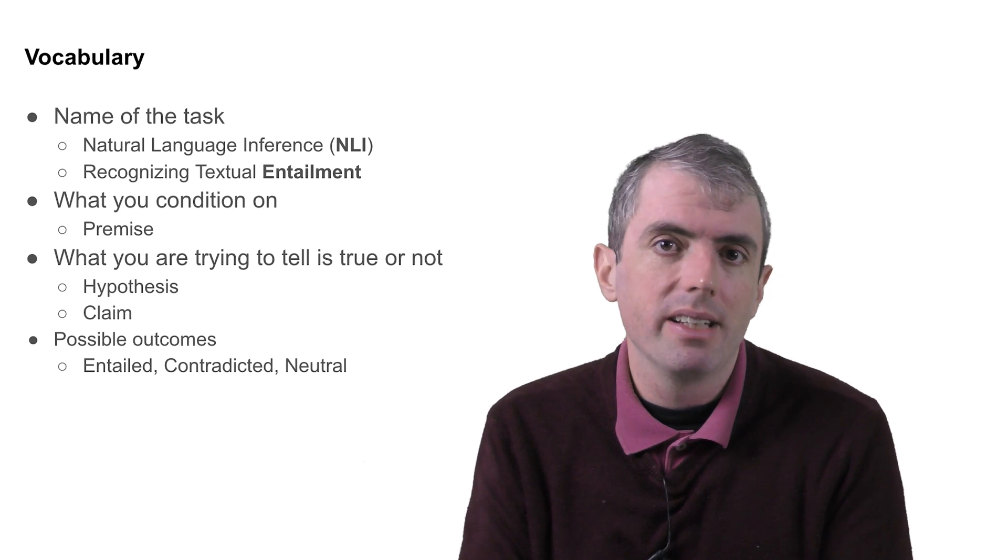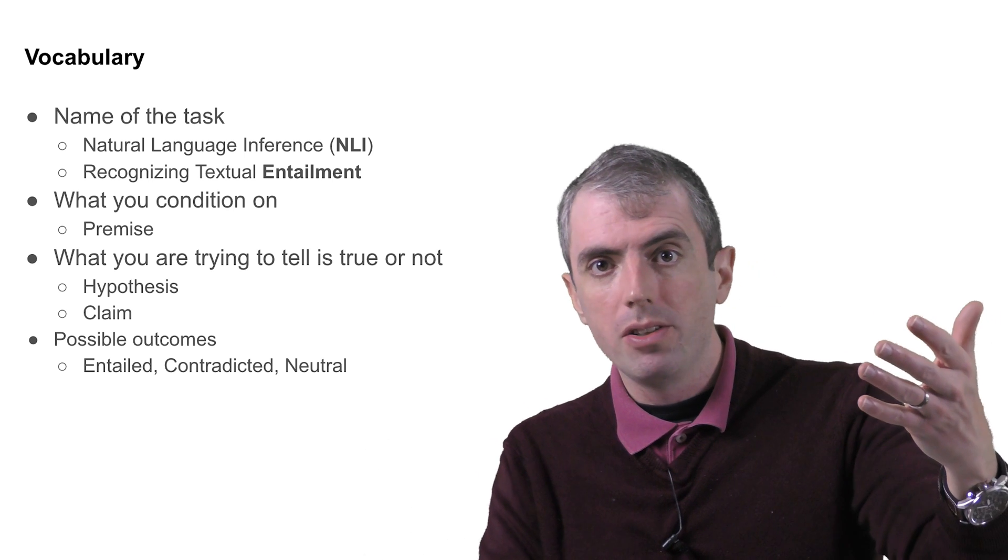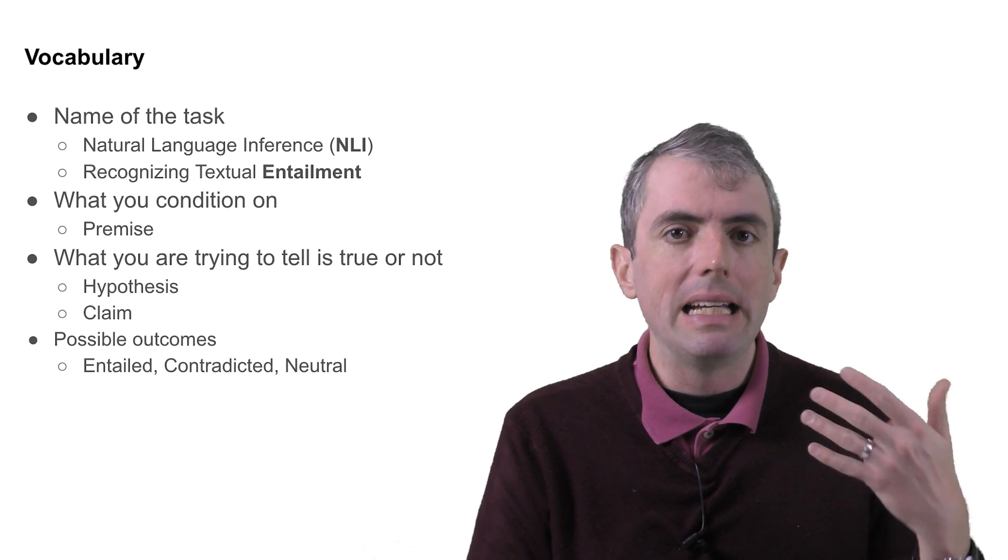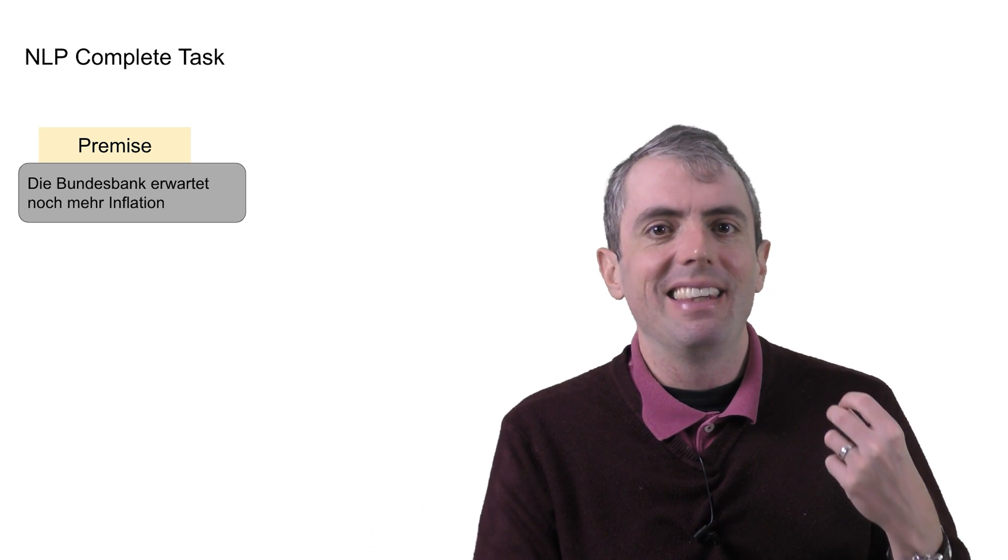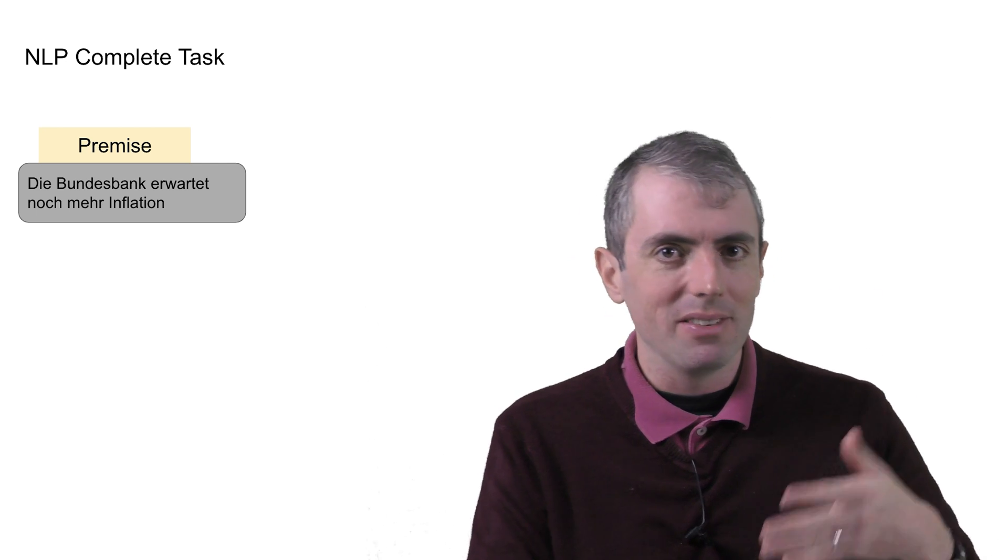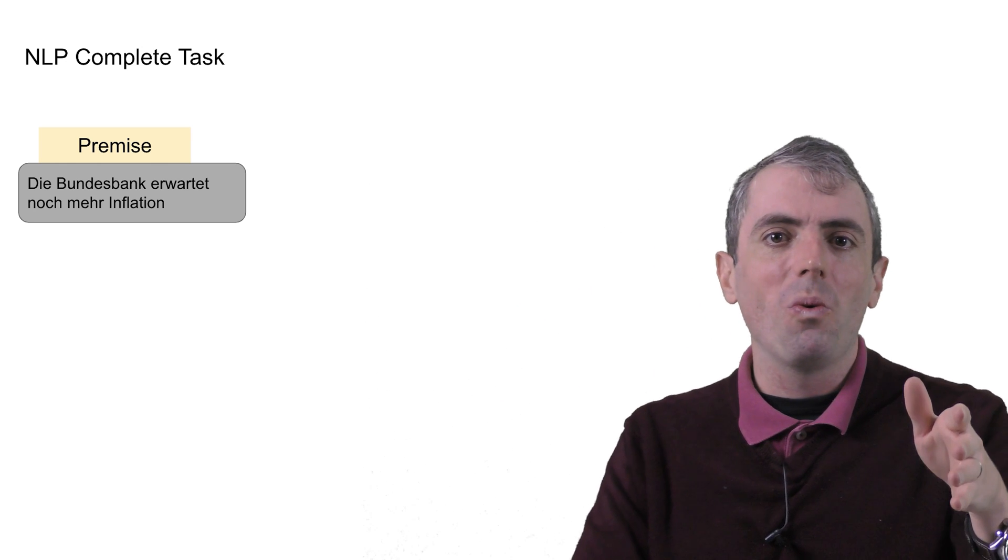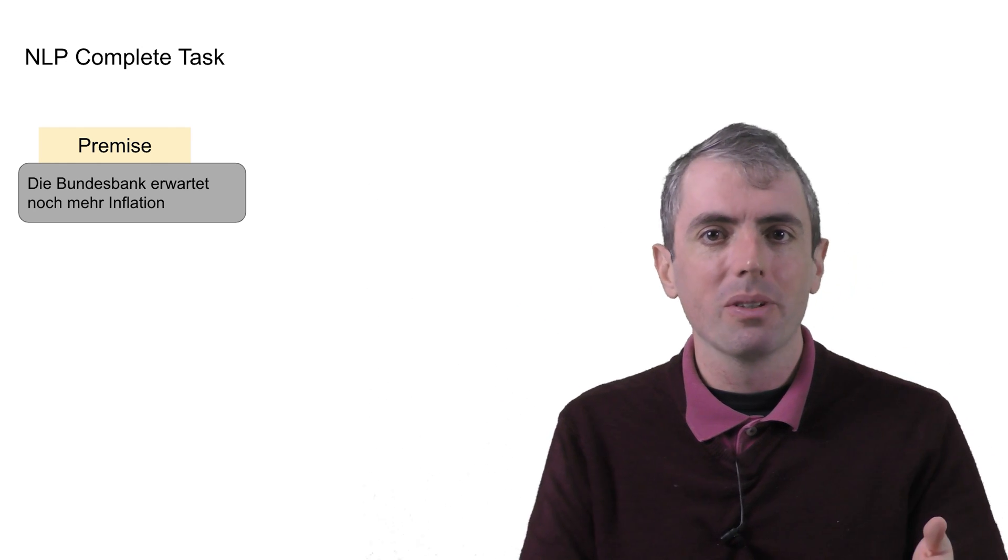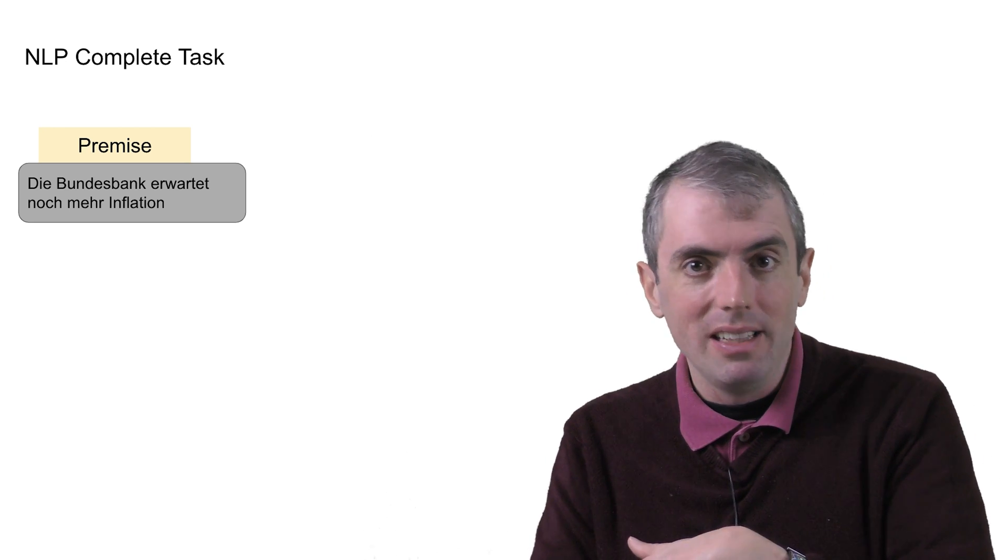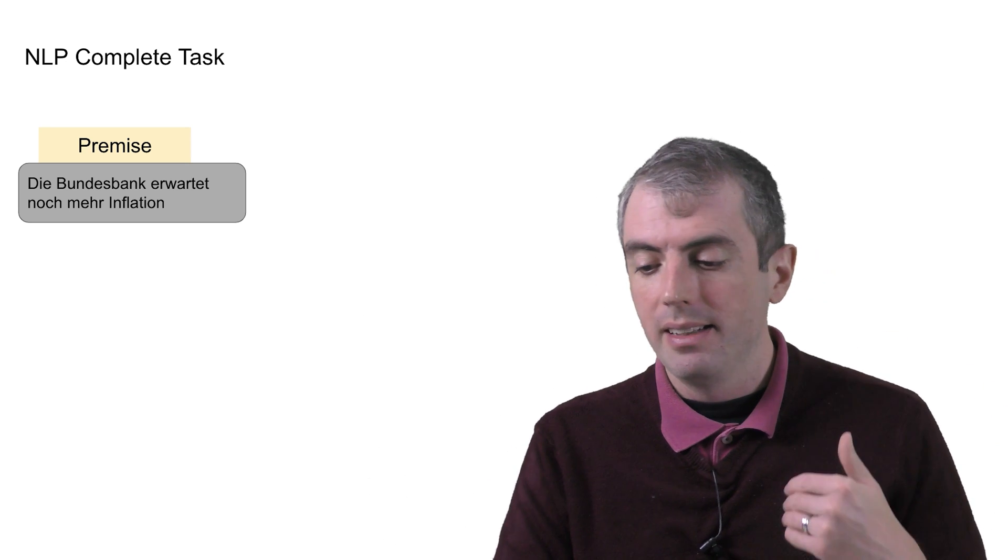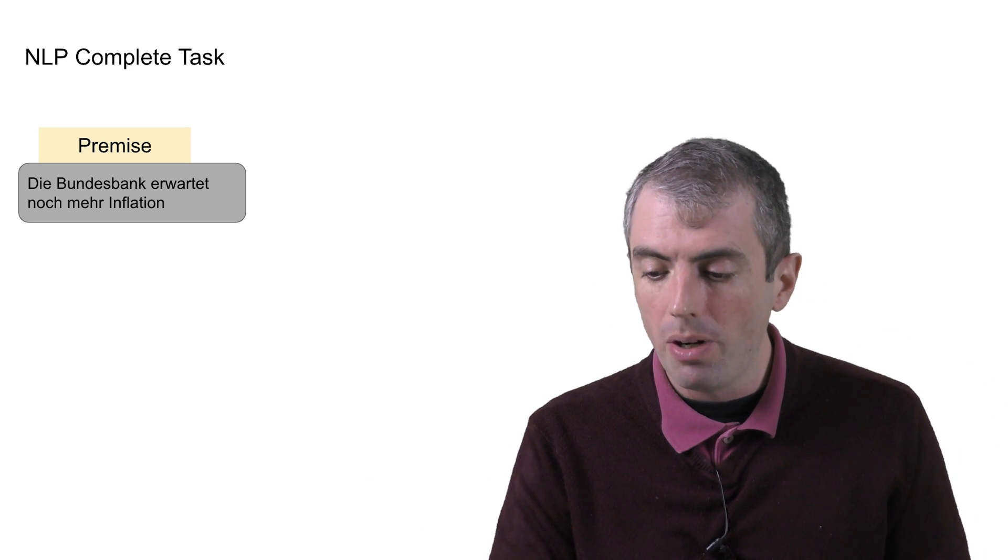Proponents of natural language inference as something everybody should work on like to call the problem NLP complete. Like NP complete in the theoretical computer science realm, if you solve entailment, you can solve all of natural language processing. For example, if you can figure out what translation is correct if you have the source sentence as your premise and then the right answer is whatever is entailed. For example, if the premise here is, die Bundesbank erwartet noch mehr Inflation,